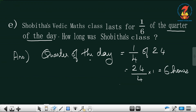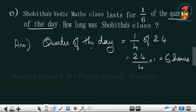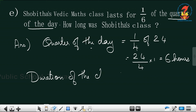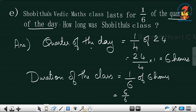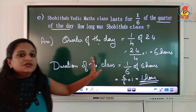Quarter of the day means one day has 24 hours, and one fourth of 24 is 24 by 4, which gives 6 hours. Now to find how long Shubhida's class was, you need the duration of the class. It is one sixth of the quarter, so you find one sixth of 6 hours. That is 6 by 6 into 1, which gives you 1 hour. So the class lasted for one hour. Duration of Shubhida's class is one hour.